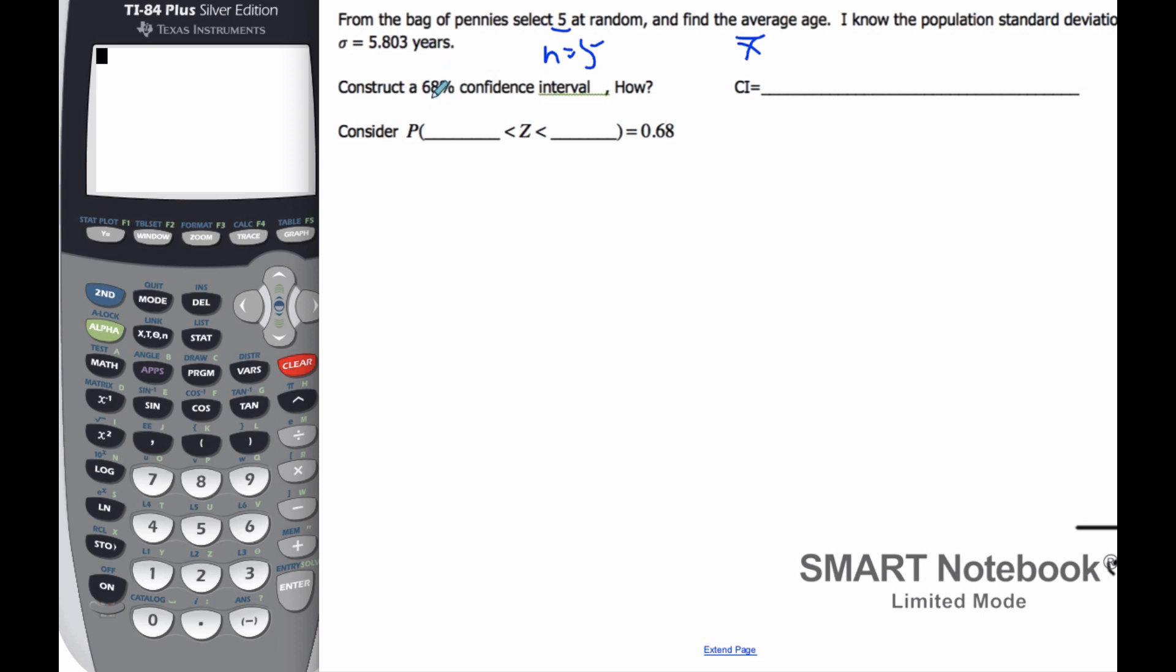I want to construct a 68% confidence interval. Well, what does that actually mean? Well, I want to find out for my value, what's the confidence that it'll be in the interval that I have to be 68%.